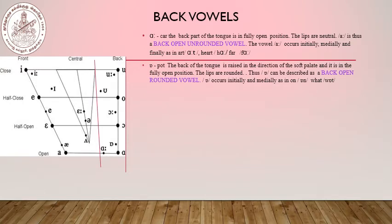The next one is /ɒ/ as in 'pot' — a short vowel. The back of the tongue is raised in the direction of the soft palate during articulation, and it is in a fully open position, just a little above the long /ɑː/ sound. The lips are rounded. Thus /ɒ/ can be described as a back open rounded vowel. The vowel /ɒ/ occurs initially and medially, as in 'on' and 'pot' — it does not occur finally.